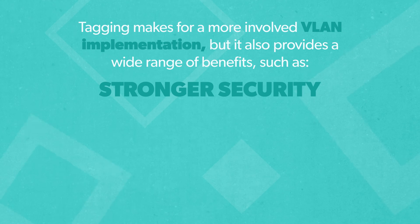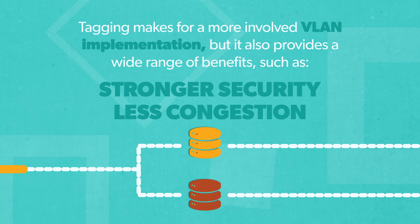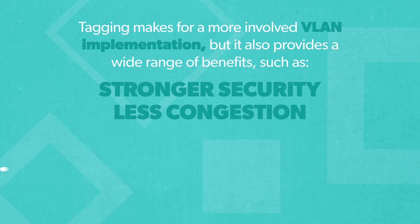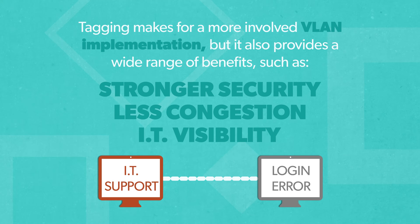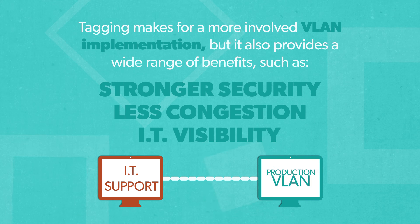Tagging also leads to less congestion. By pre-configuring traffic direction, networks are more efficient and eliminate the need for costly devices. IT has visibility into VLAN tags as well, making it easier for them to understand the root cause of any issues and make updates on the fly.